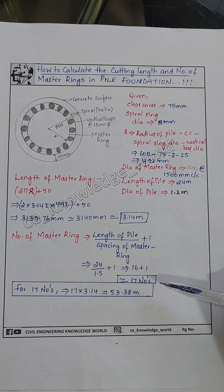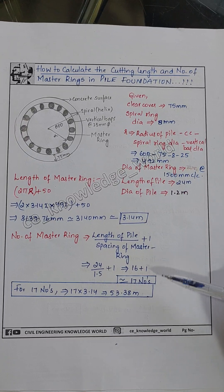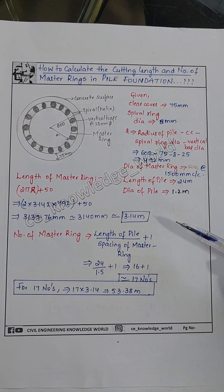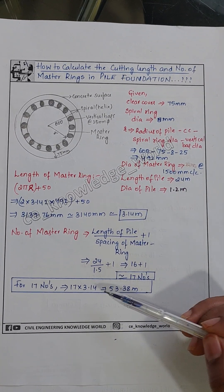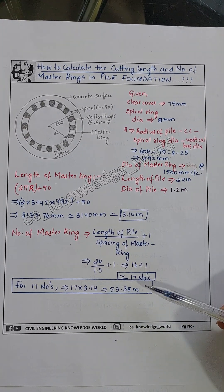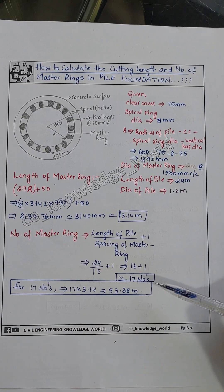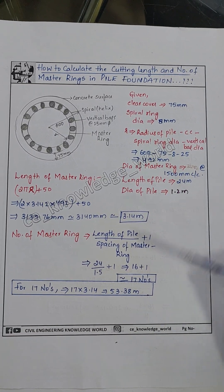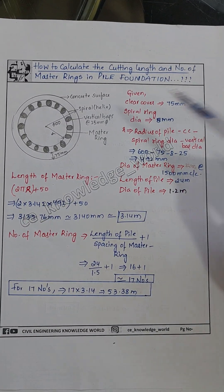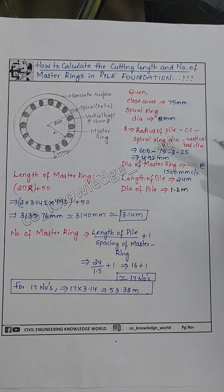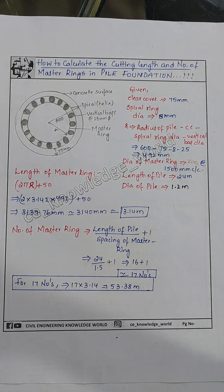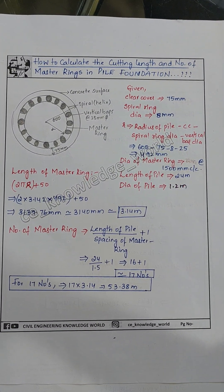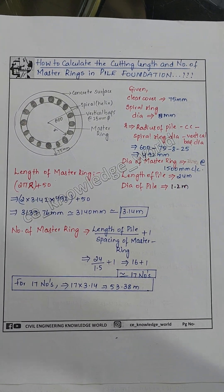This gives us 17 numbers of master rings required. So 17 × 3.14 = 53.38 meters of steel is required for these dimensions. If you like this video, please follow, like, share, and subscribe to this channel. Thank you all.